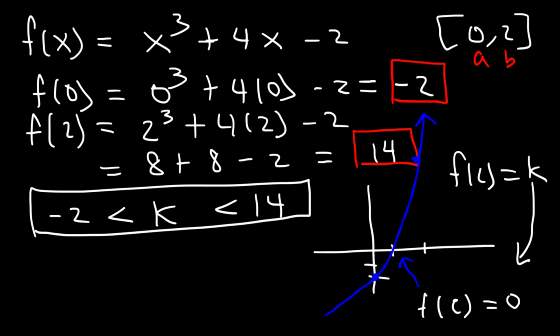In order to find it, we need to set f of x equal to zero and then solve for x. We know it's somewhere between zero and two. It's not one, because if we plug in one we're going to get positive three. So technically, it's going to be between zero and one.